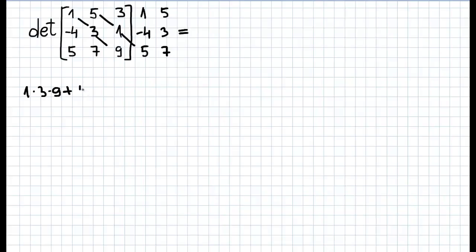1x5, 5x1x5, plus 3x(-4)x7, 3x(-4)x7. Then we start to go backward and start to subtract: minus 5x3x9, minus 1x1x7, minus 3x3x5.